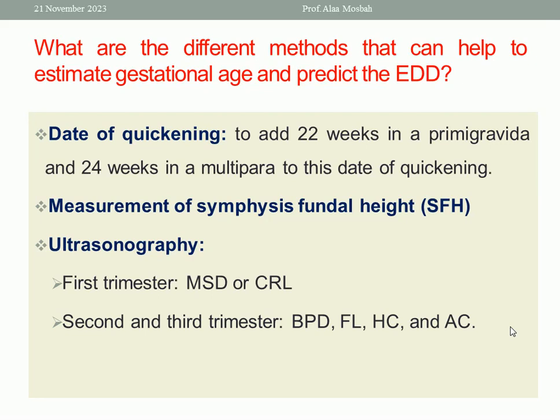Measurement of symphysis-fundal height: using a measuring tape, after detecting the top of the fundal level, we measure the distance from the symphysis pubis up to the top of the fundus. This is called symphysis-fundal height. It is in centimeters equal to that of weeks. So if it is, for example, 32 centimeters, this means the lady is pregnant at 32 weeks.